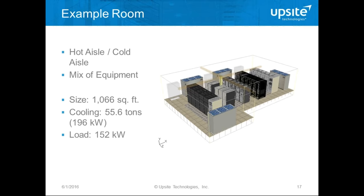Let's look at applying that technology in the case shown — a cold lock applied to the racks in a small room of only 1,000 square feet with nearly 200 kilowatts of cooling and about 150 kilowatts of load. There ought to be ample cooling.